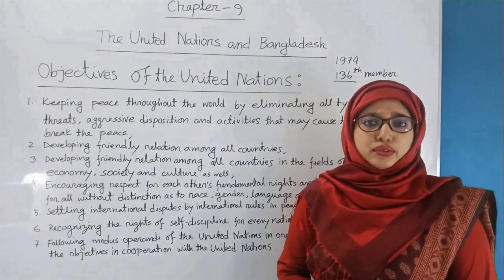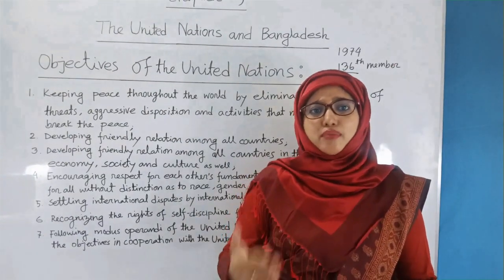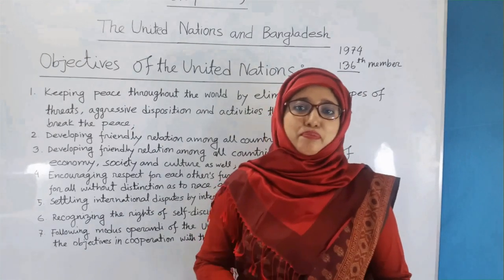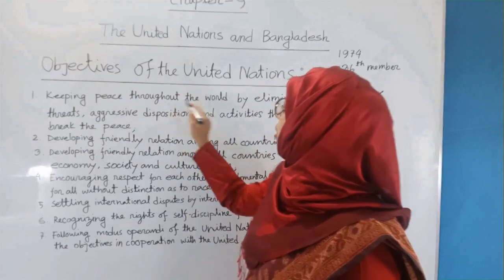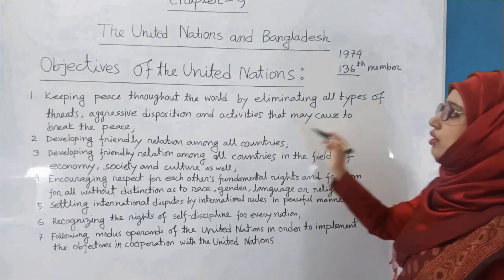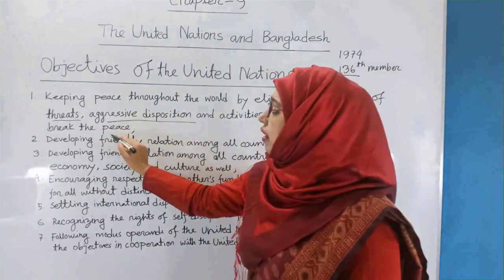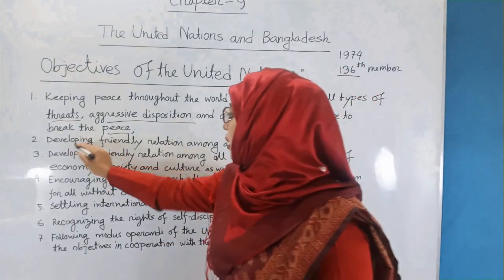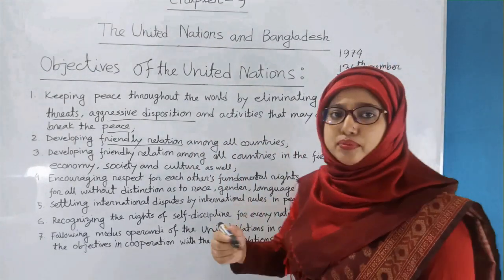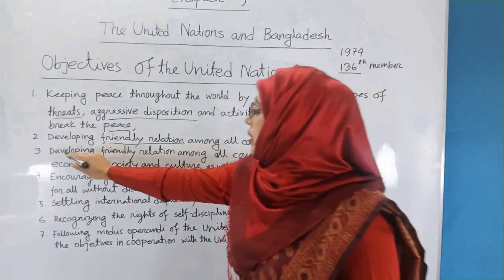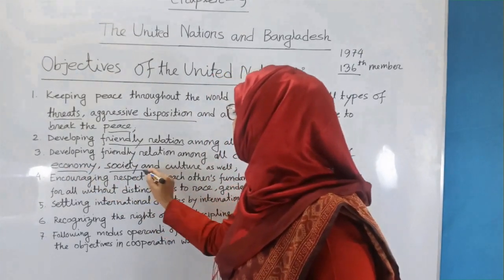Now I am going to discuss the objectives of the United Nations. The main objective is to keep peace and harmony in the world. First: keeping peace throughout the world by eliminating all types of threats, aggressive disposition, and activities that may cause a breach of peace. Second: developing friendly relations among all member countries. Third: developing friendly relations among all countries in the fields of economy, society, and culture as well.